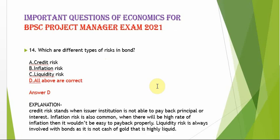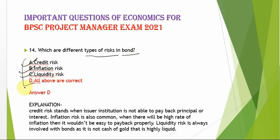What are the different types of risk in bonds? The three types are: credit risk (when the issuing institution is unable to pay back principal or interest), inflation risk (when high inflation makes repayment difficult), and liquidity risk (bonds are not as liquid as cash or gold). All are correct, so option D is the correct answer.